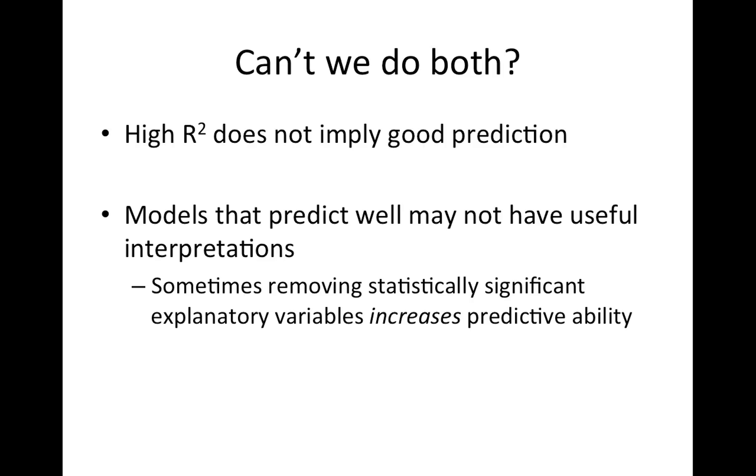Also, models that predict well may not have useful interpretations. For example, if you use something like ridge regression and you have two highly correlated features in your regression model, it doesn't pick the better one necessarily and keep it - it just kind of grabs one of the two highly correlated ones and keeps it. So you're throwing out something that maybe in the explanation sense would be interesting to know about, but when you're predicting you don't care.